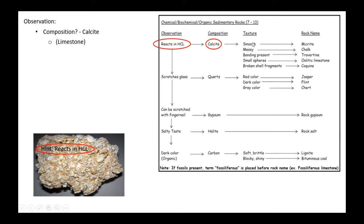Now we have to look at the texture. We can see that this texture is by no means smooth. It's not messy. There's no banding that you see here. There are no small spheres. But what we do see is a coarseness to the texture.